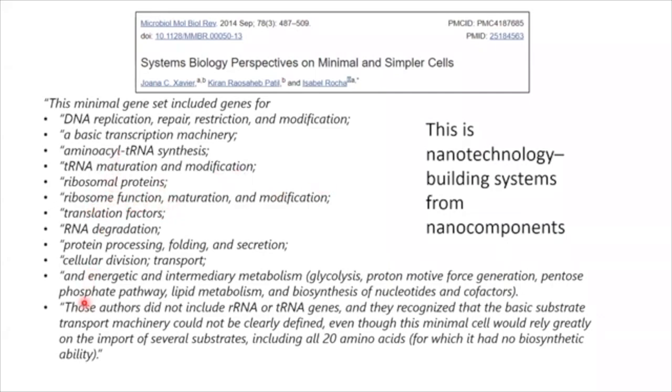And even with all of that, it has to be able to get all 20 amino acids exogenously because it has no ability to make them. It's too simple to make them. This is nanotechnology — this is building systems out of nanocomposition.